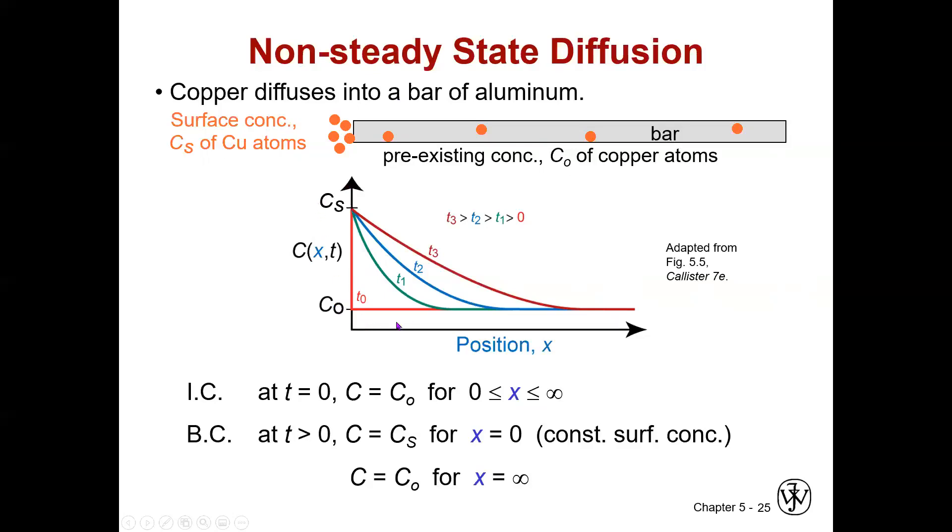And then with time, we're going to end up with these profiles as I move more and more copper into this material. So my initial and boundary conditions are that at time equals zero, I have an initial value for all x. And then at time greater than zero, I set my surface to some fixed value. That's x equals zero for the surface. And I still maintain my C0 value when x is equal to infinity. Okay, so that just says over the time frame of my problem, I never reached the other side. So this doesn't have to be infinite in thickness, it just needs to be thick relative to my time frame.